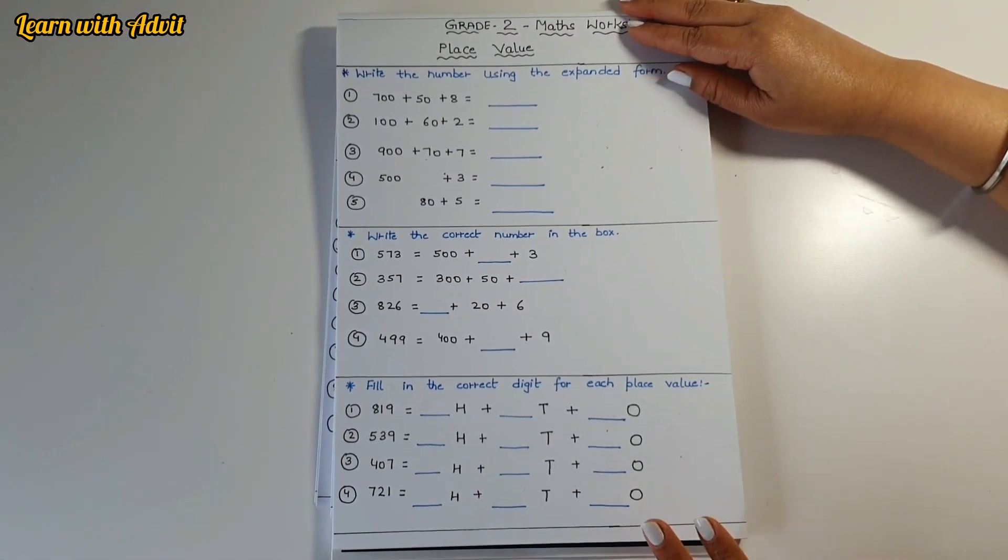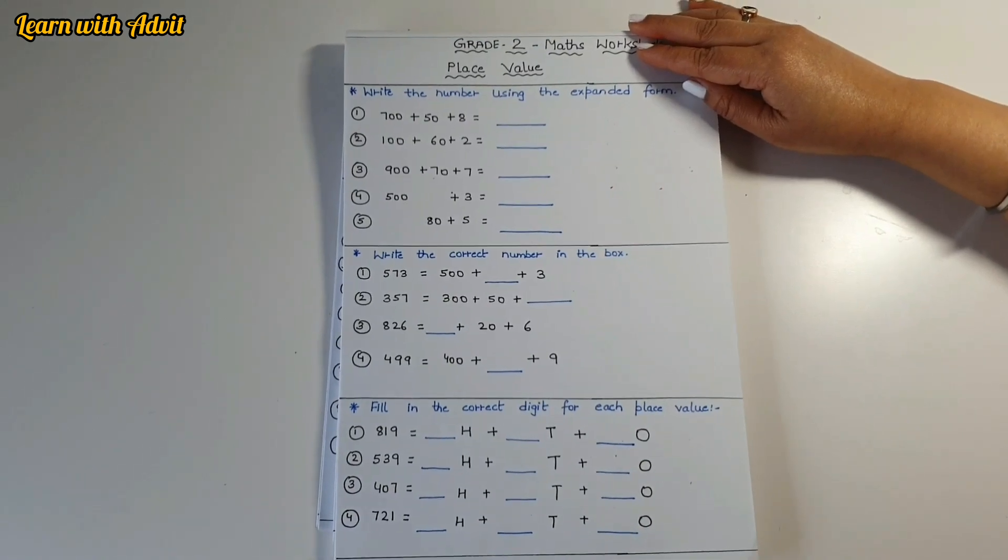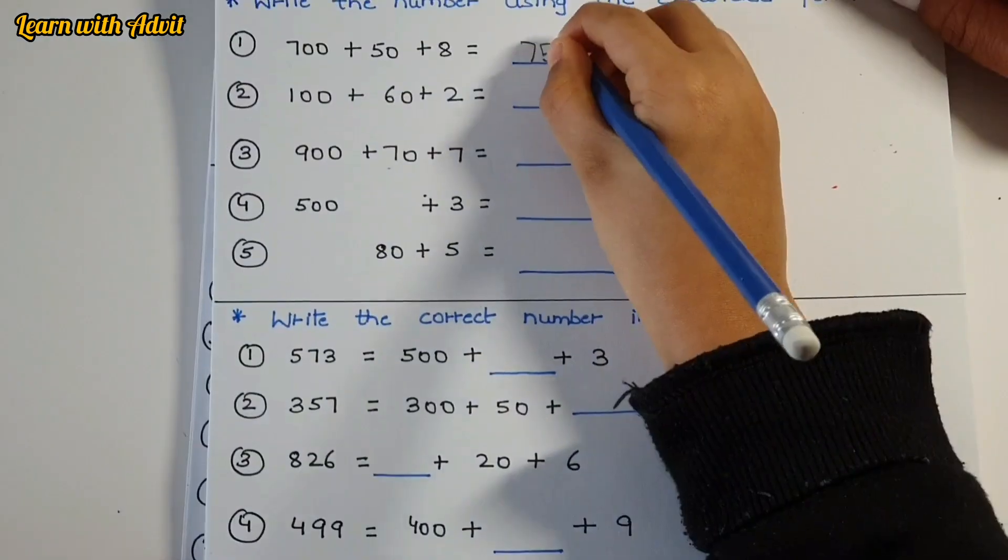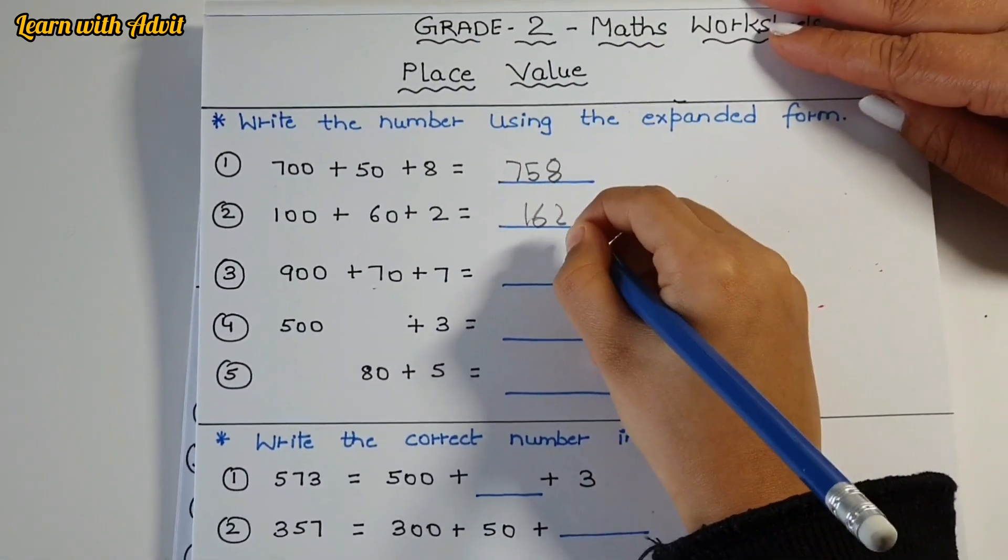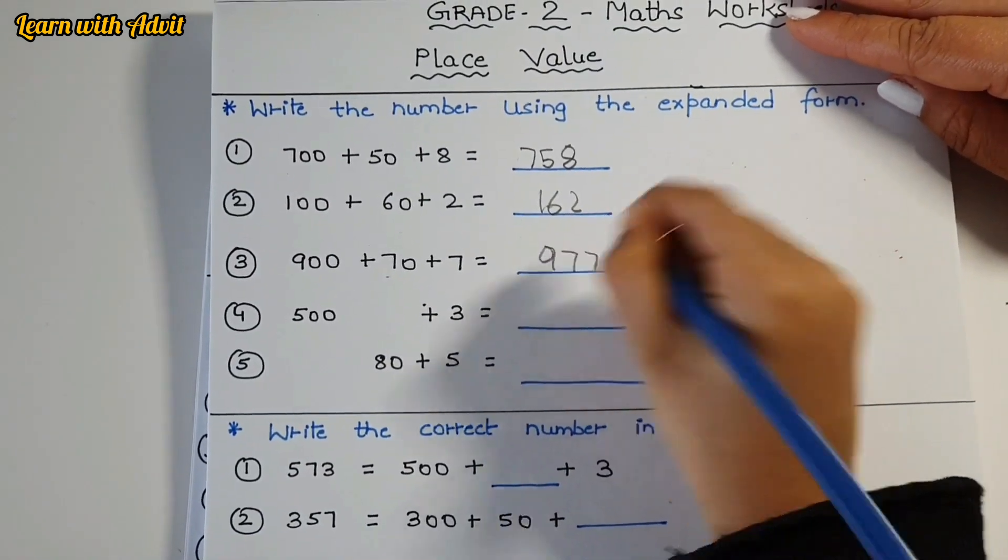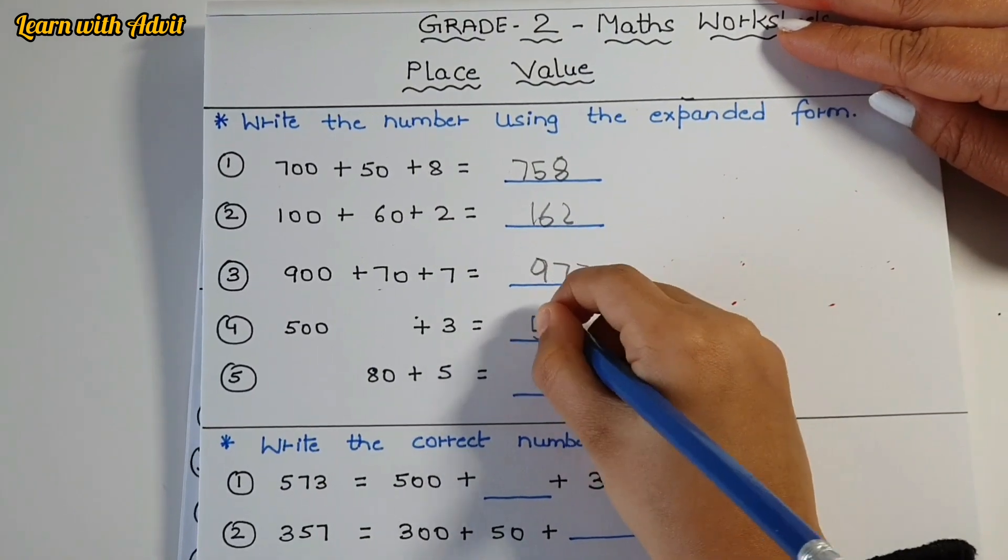This is the place value sheet. Write the number using the expanded form, write it down fast. 700 plus 50 plus 8 is 758. 100 plus 60 plus 2 is 162. 900 plus 70 plus 7 is 977, very good. 500 plus 3 is 503, there is no tens. 80 plus 5 is 85, good.